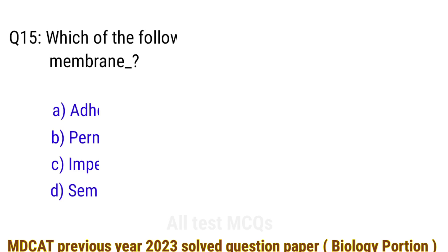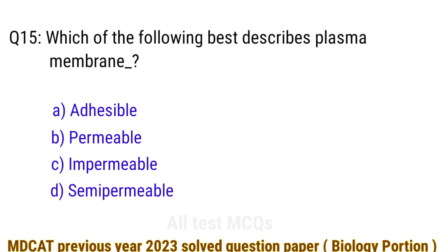Question number 15. Which of the following best describes the plasma membrane? The right answer is option D: semipermeable.